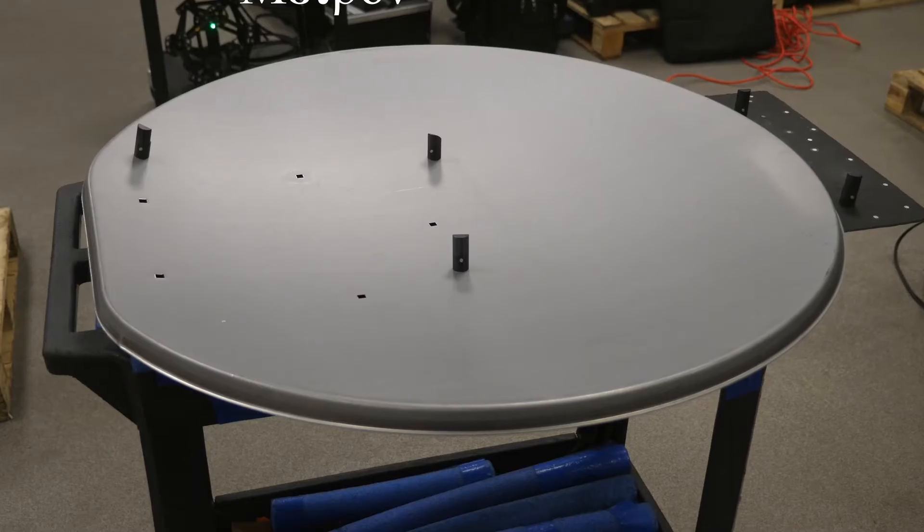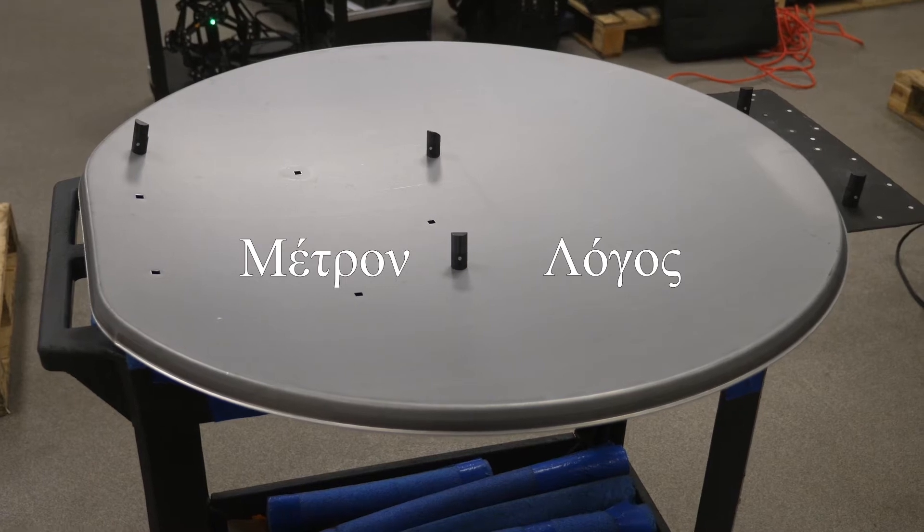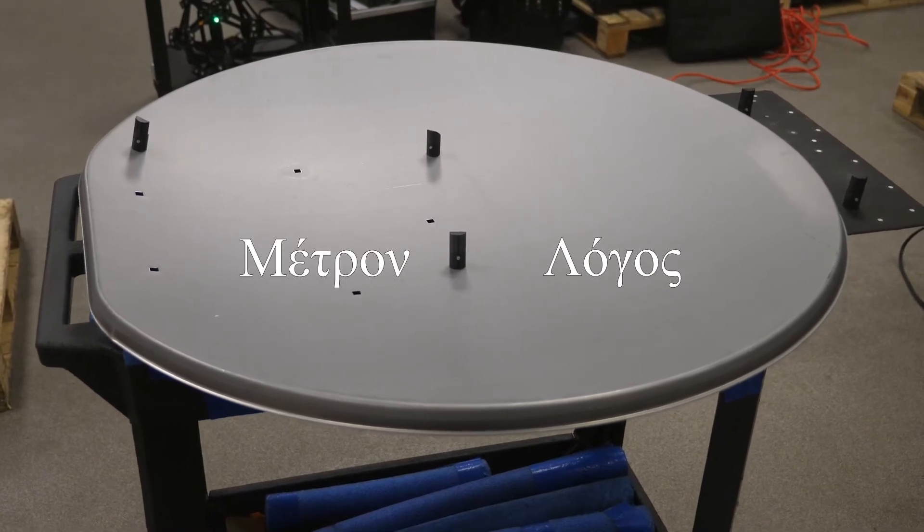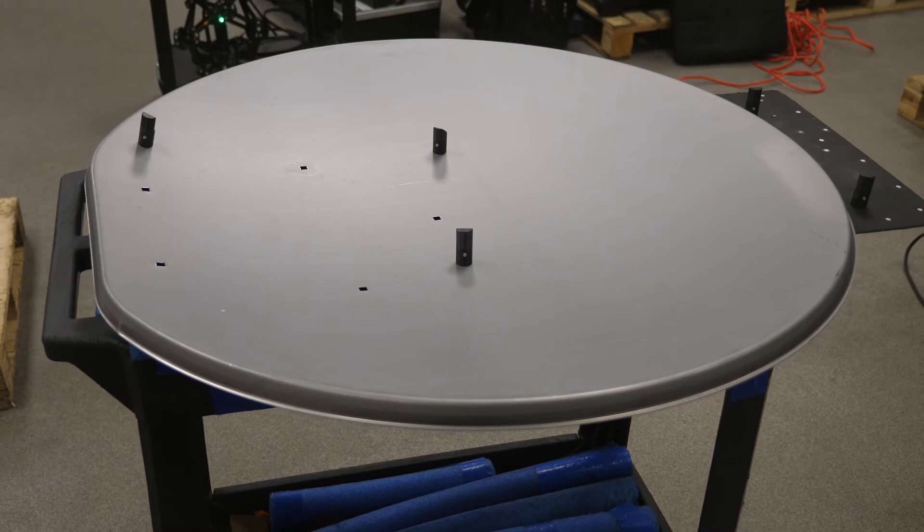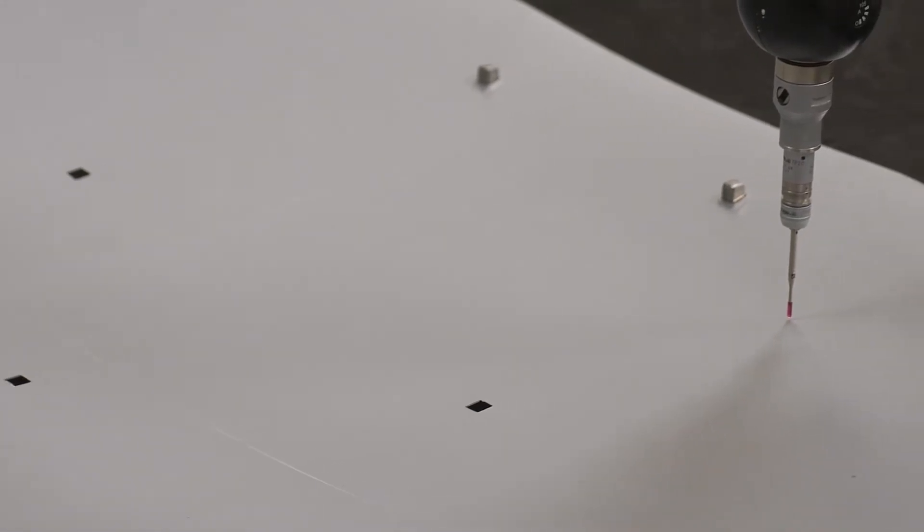Metrology derives from the Greek words metron and logos, which translated means the study of measurement. The origins of measurement go even further back than the Greeks to the Egyptians. They would use standards of measurement with regular calibrations to ensure stones were cut to correct size for their building projects.